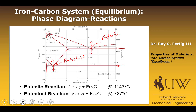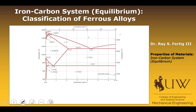The way we quantitatively analyze these is the same as before: we use a tie line to get our compositions, and then use a lever rule to get our phase amounts. That's a brief introduction. I also want to talk about how we classify ferrous alloys using this diagram — there are basically three classifications: iron, steels, and cast irons.